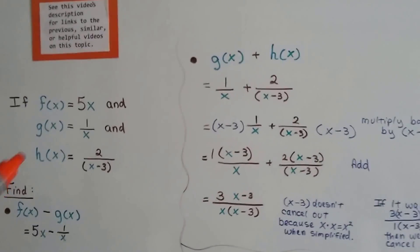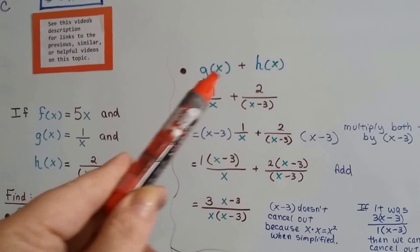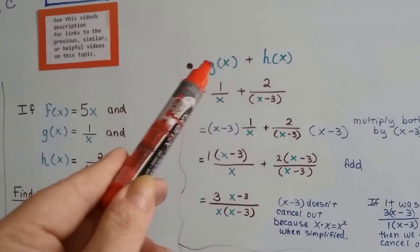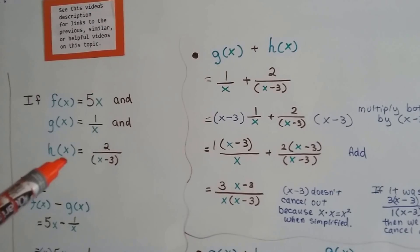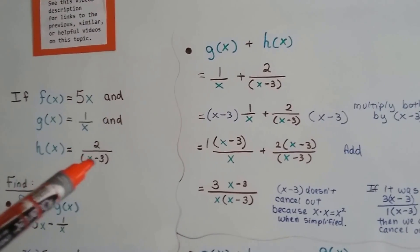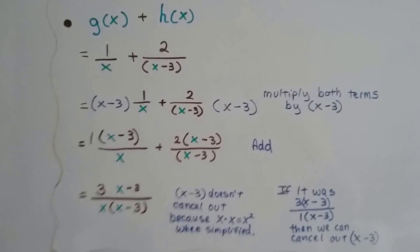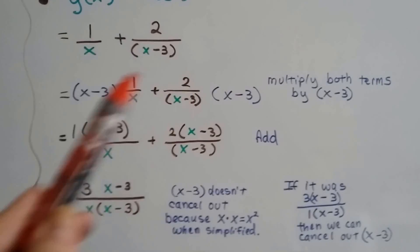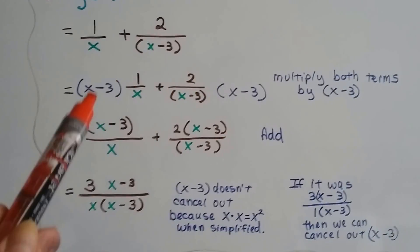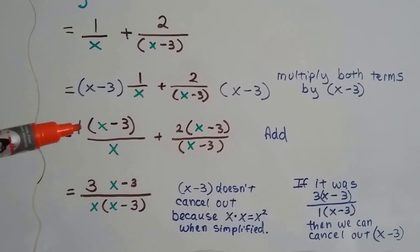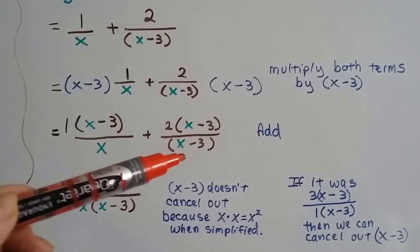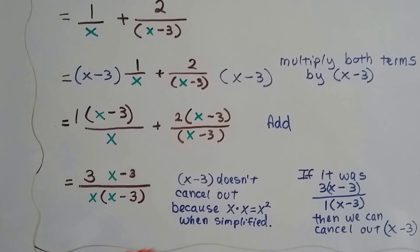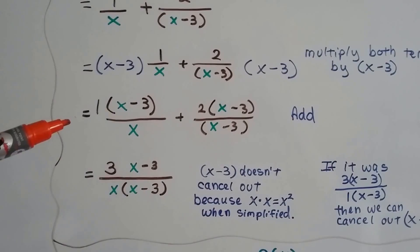If we have this one and we're going to add these two together, then we have 1 over x plus 2 over x minus 3. We can multiply both terms by x minus 3, and we get 1 times x minus 3 over x, plus 2 times x minus 3 over x minus 3. And we can just add them.